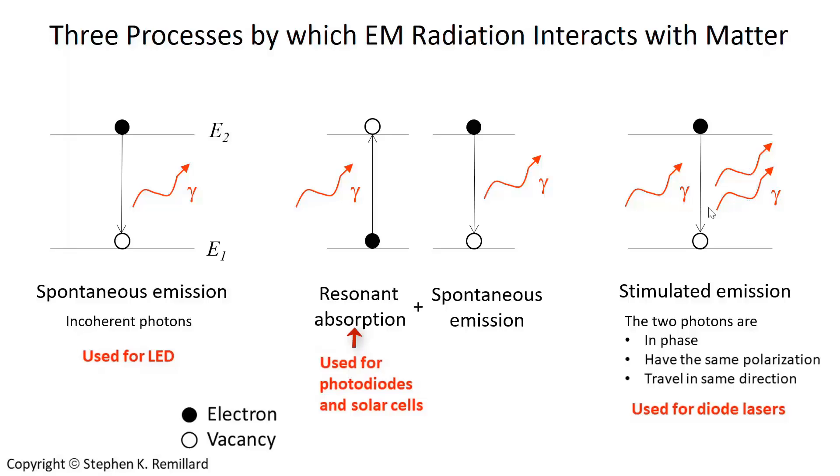They have the same polarization. What that means is that the photon that came in had its electric field pointing to the left. Then these two photons will have their electric field vector pointing to the left. Finally, they're going in the same direction. When those conditions are met, you say that those photons are coherent.